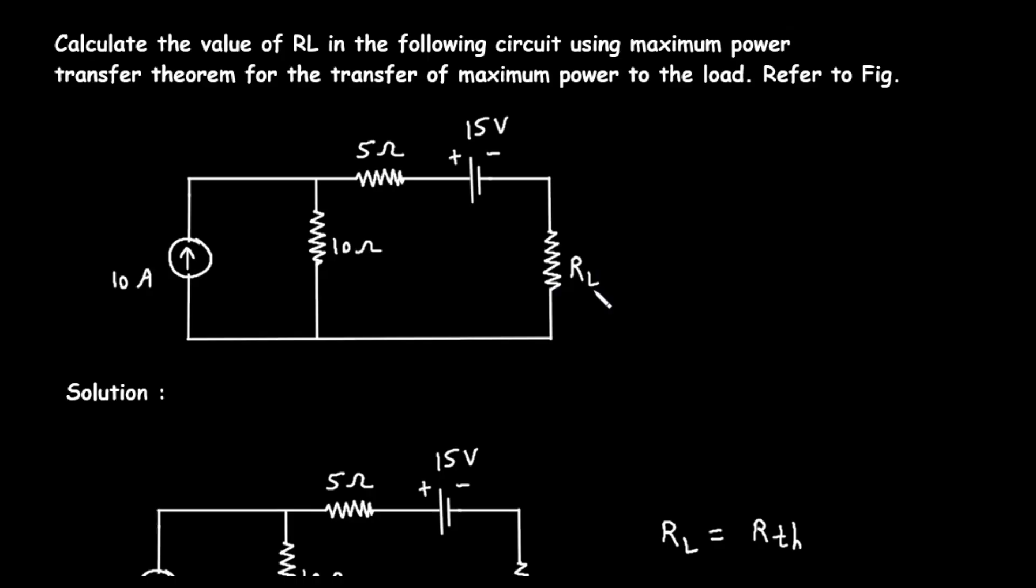The maximum power transfer theorem states that for a DC voltage source with an internal resistance, or more generally, for any network of sources and resistors, the maximum amount of power will be delivered to a load resistor when the load resistance is exactly equal to the Thevenin equivalent resistance of the source network.